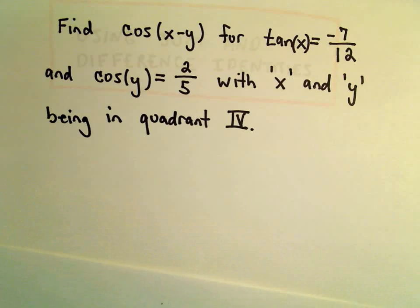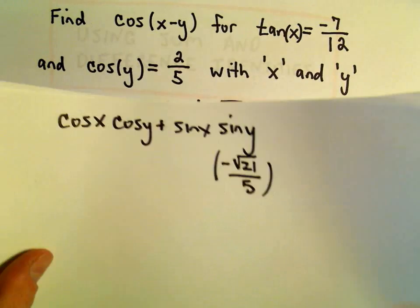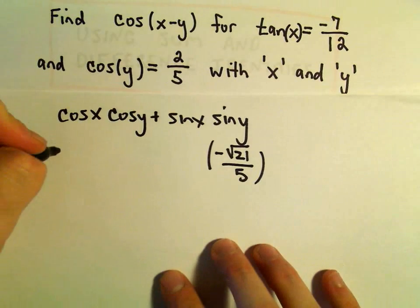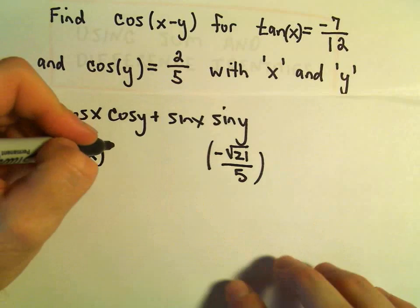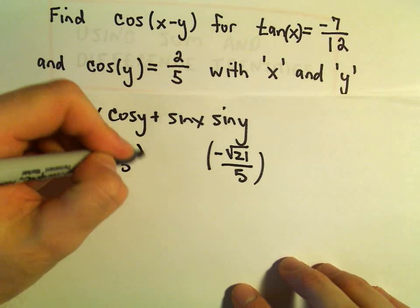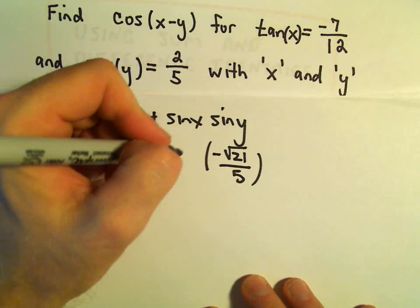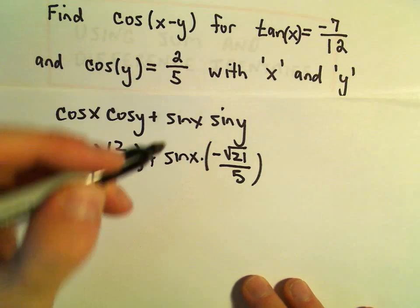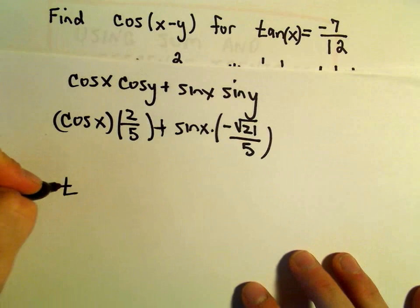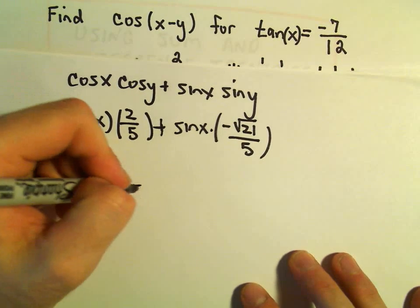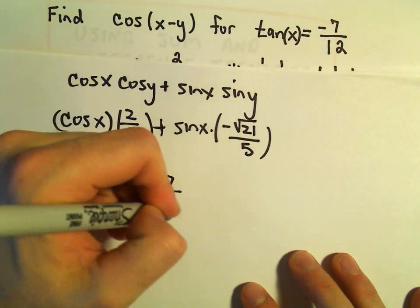We were given the value for cosine y. So we still don't know cosine x. Cosine y we're given as 2 fifths. We also still don't know the value for sine x. So I'm just filling in what we know at this point. But we know that tangent of x equals negative 7 over 12.